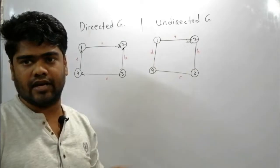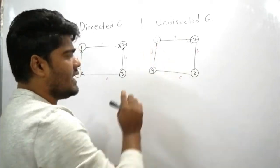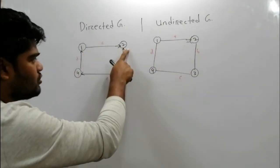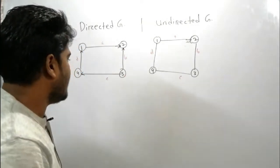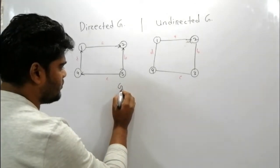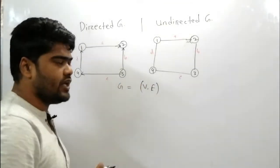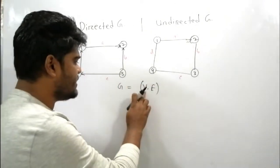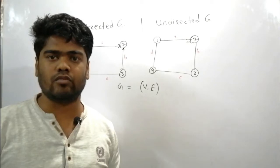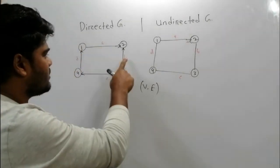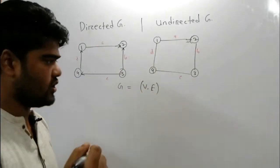In the undirected graph, we will see that 1 connects to 2, 2 connects to 1, 1 connects to 4, and 4 connects to 1. Here is a graph with vertices 1, 2, 3, 4 and we will see the set of edges.